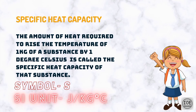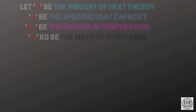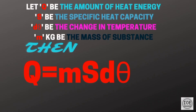Specific heat capacity: the amount of heat required to raise the temperature of one kilogram of a substance by one degree Celsius is called the specific heat capacity of that substance. The symbol of specific heat capacity is S and its SI unit is joules per kilogram per degree Celsius. If Q is the amount of heat energy, S is the specific heat capacity, and D-theta is the change in temperature, then we can write: Q equals M times S times D-theta.